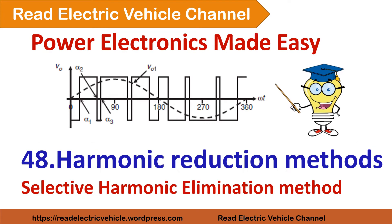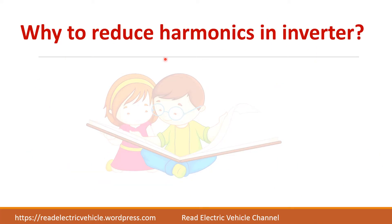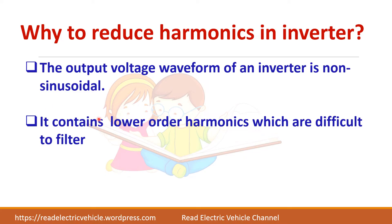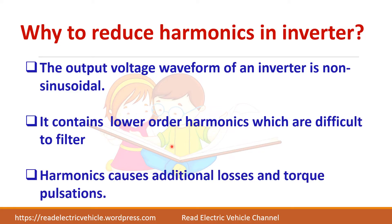Let us see about harmonic reduction methods in single phase inverter. Why do we have to reduce the harmonics in inverter output? Because we want a sinusoidal output. But normally a square wave inverter produces a non-sinusoidal output which has a lot of harmonics in it. This inverter output contains lower order harmonics which are dominant, so it is difficult to filter them. If it is higher order harmonics, we can easily filter them out using a low size filter. Moreover, harmonics cause additional losses, heating, and torque pulsations in drives.